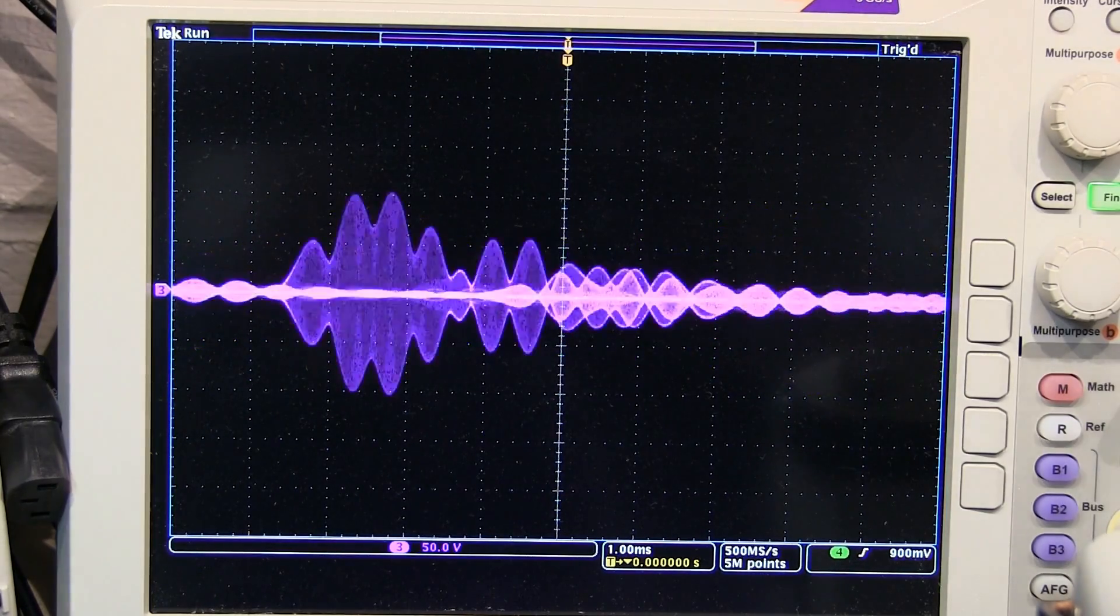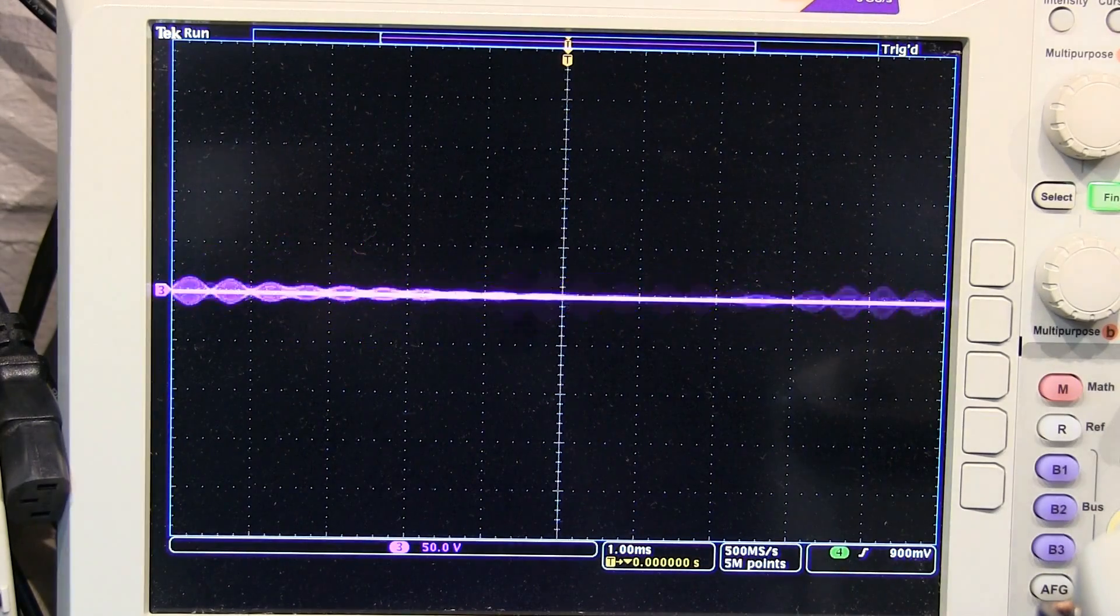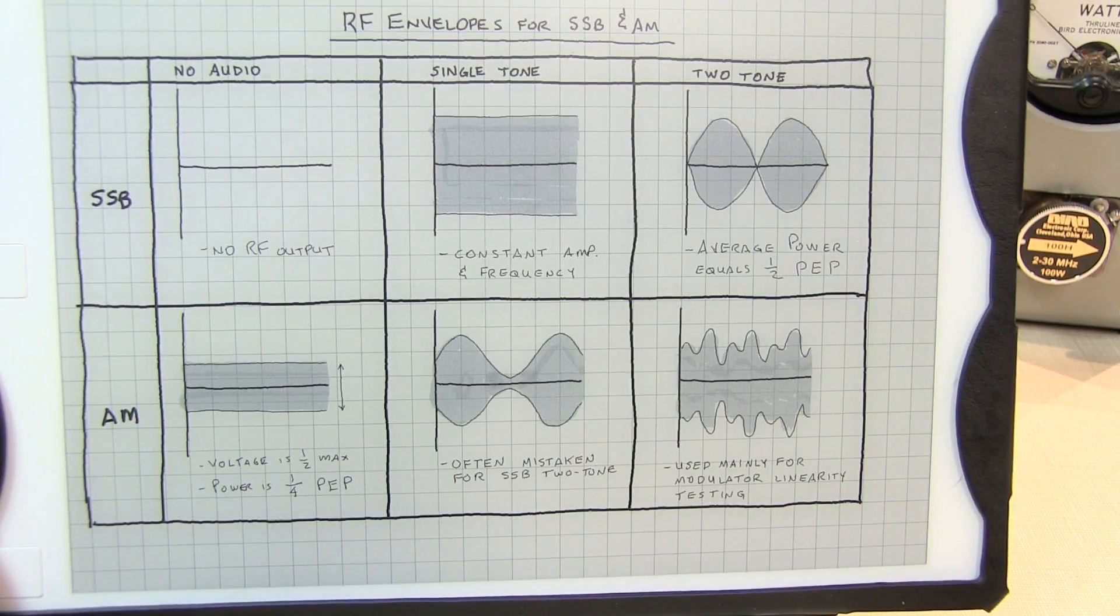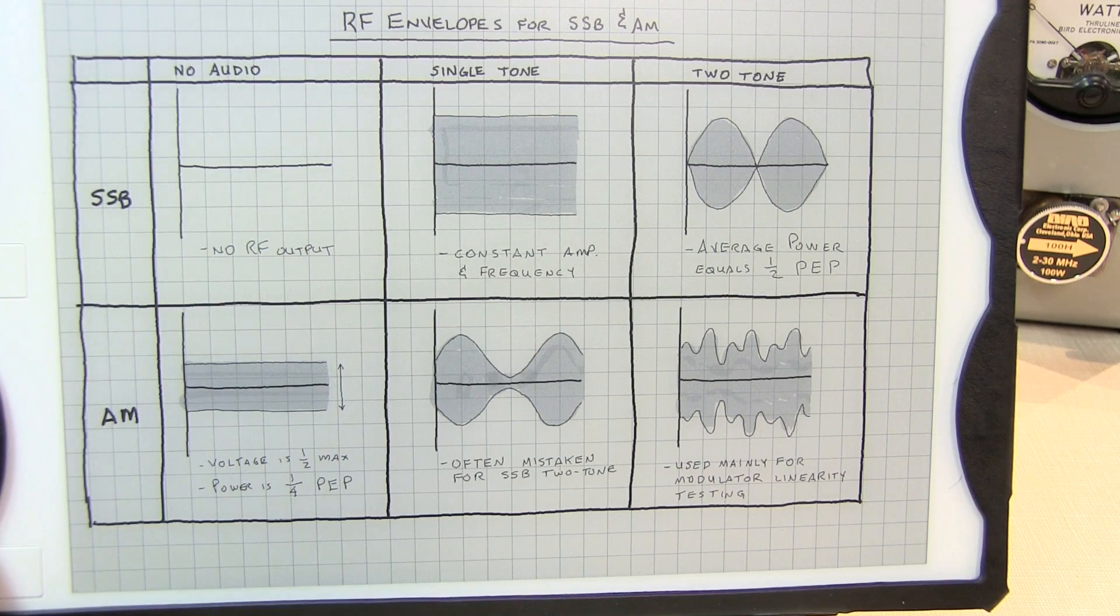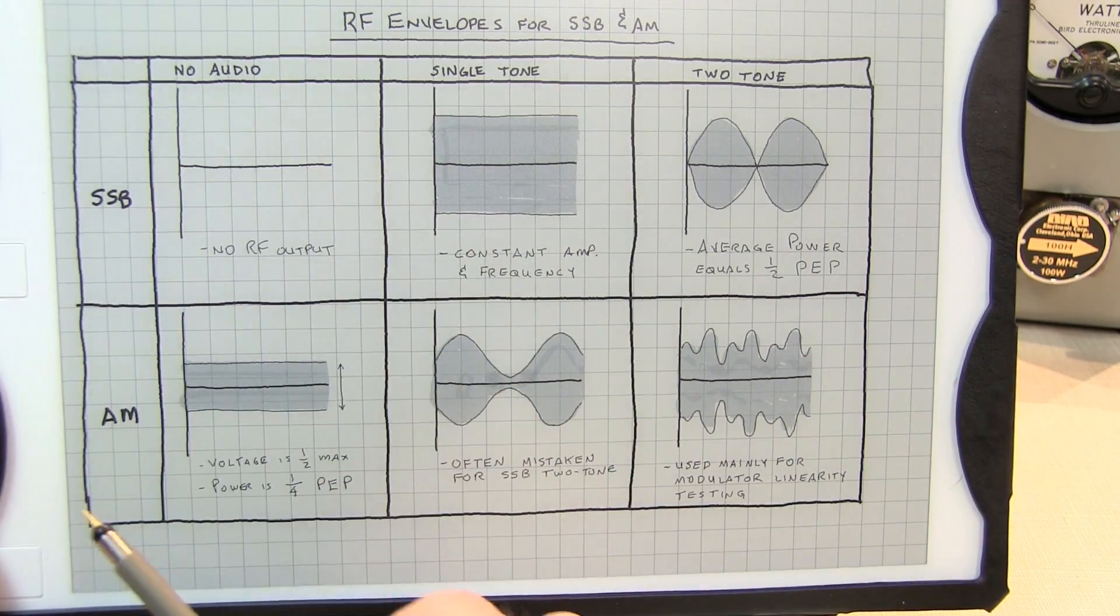At 50 volts per division, we're talking about 200 volts peak to peak, which corresponds to about 100 watts PEP, or peak envelope power. And before going off and making some measurements on the scope and with an RF power meter, let's quickly review a couple of RF envelopes for single sideband and AM.